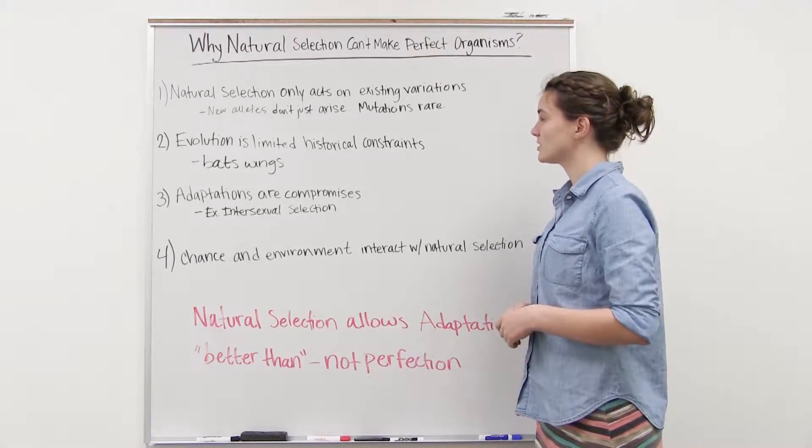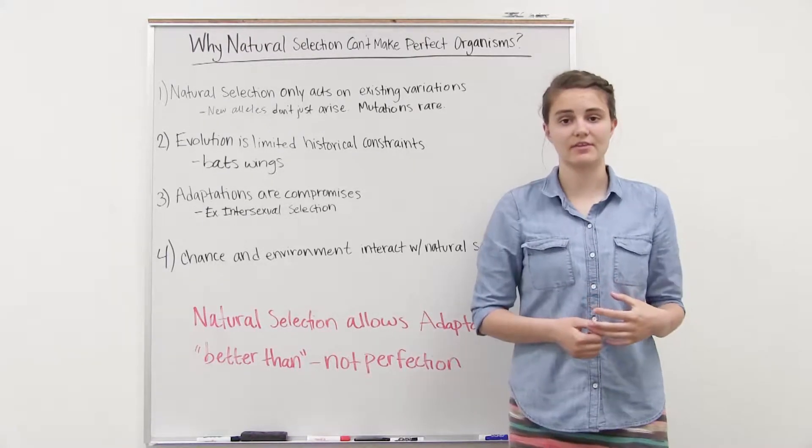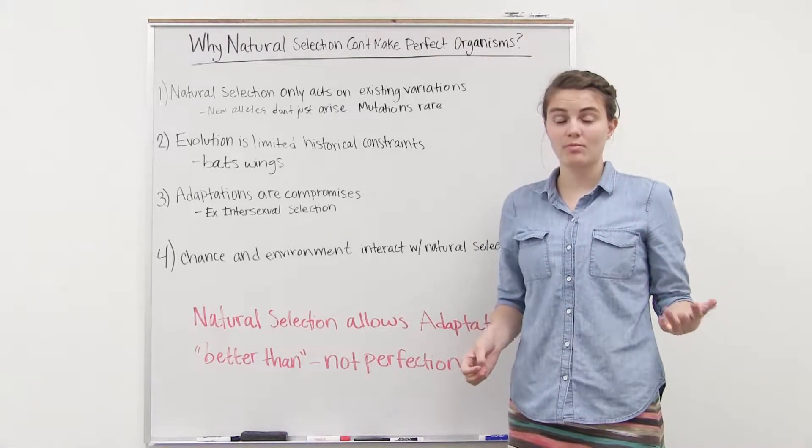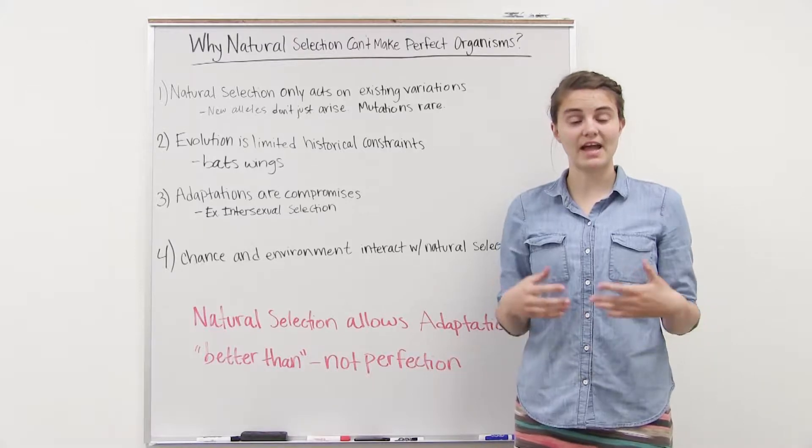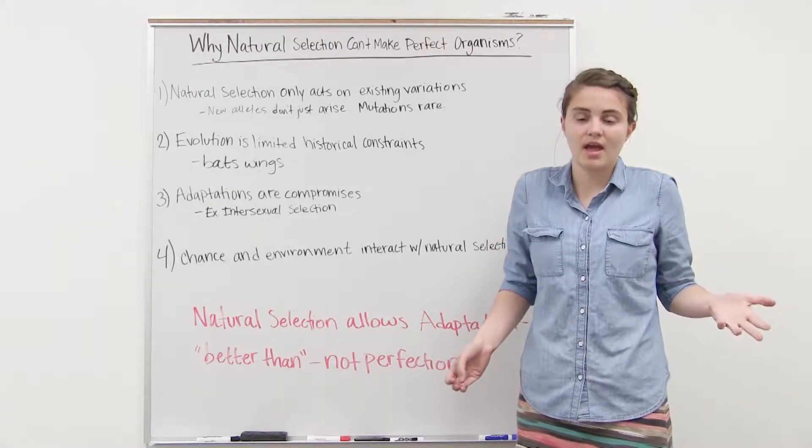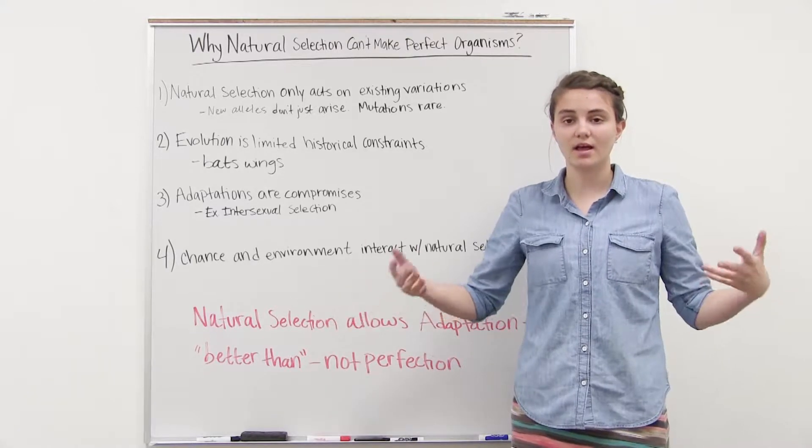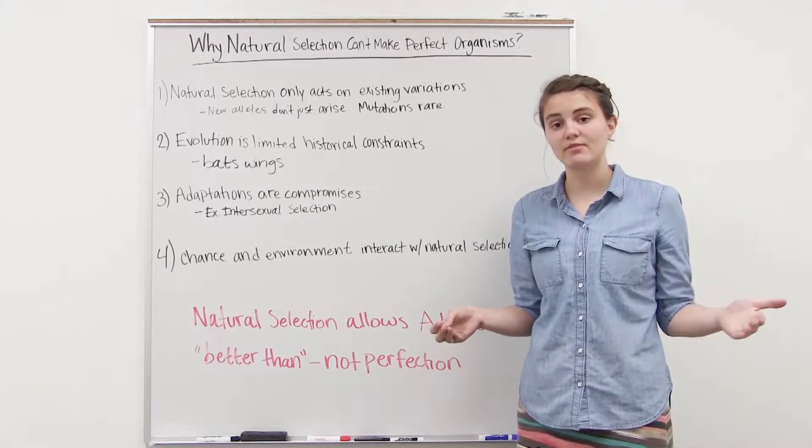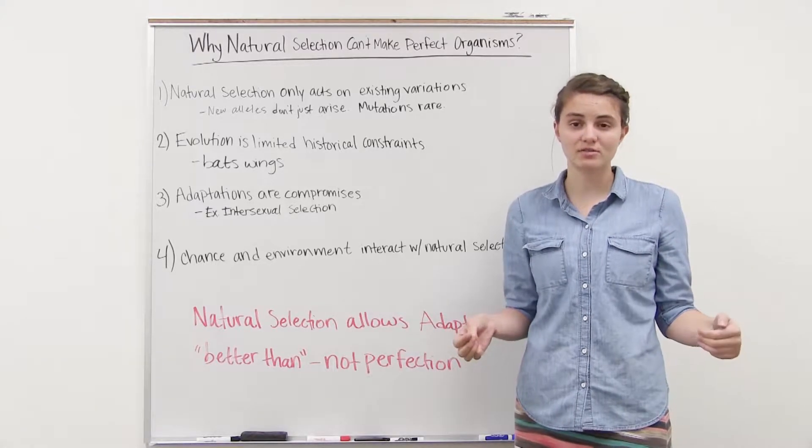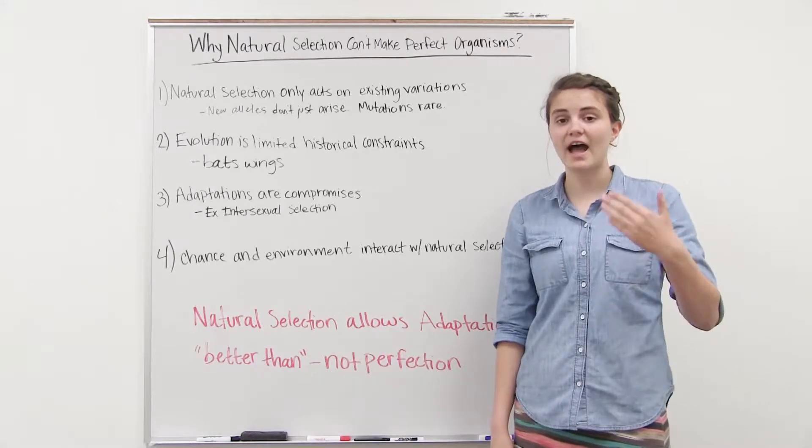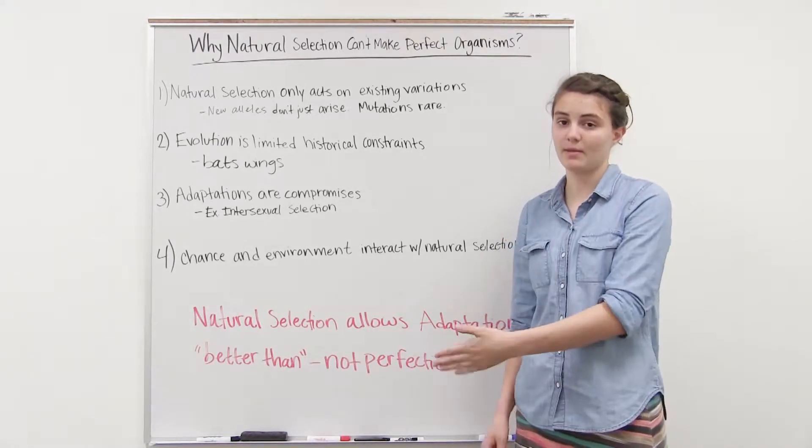The first reason is that natural selection only acts on existing variations. So if we think that a certain trait would be more beneficial to an organism, but that trait is not already in the population, then natural selection can't act on it. Natural selection looks at a population and says, this trait is beneficial for the organism's survival, and they're more likely to produce offspring this way. So over time that trait is going to become more prominent in the population.